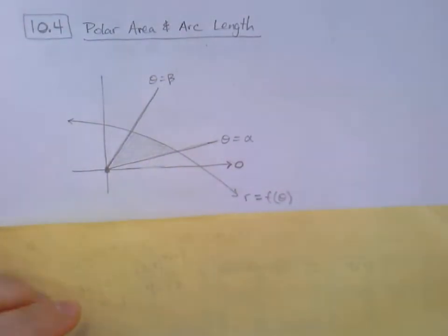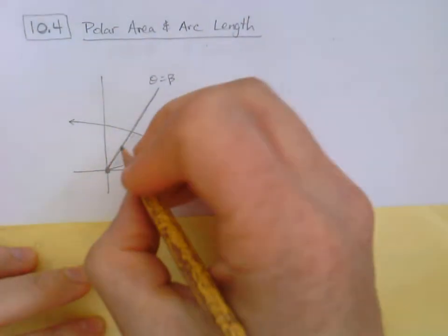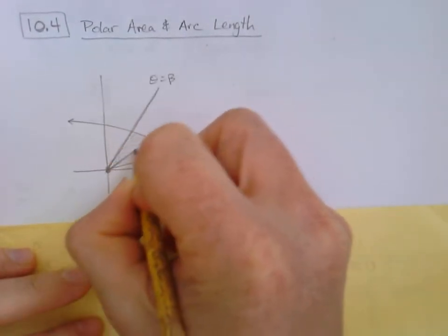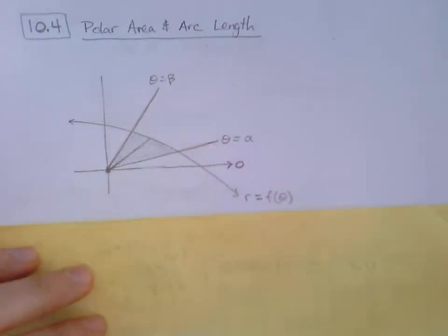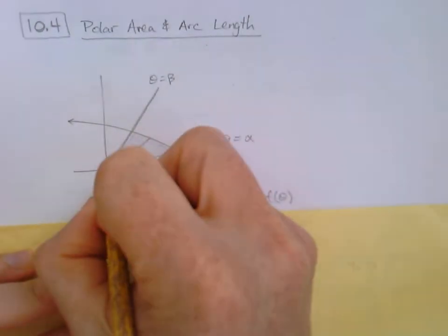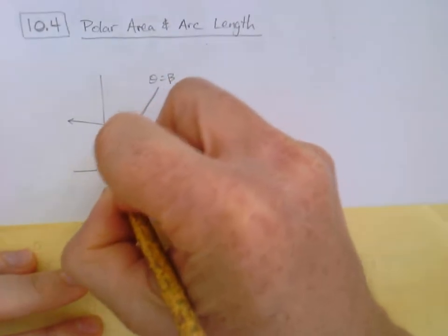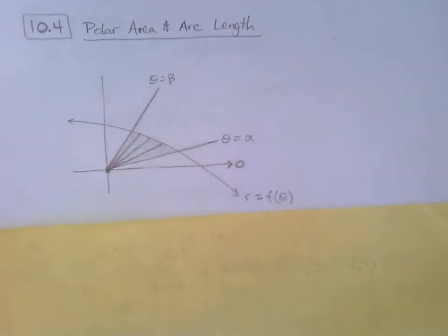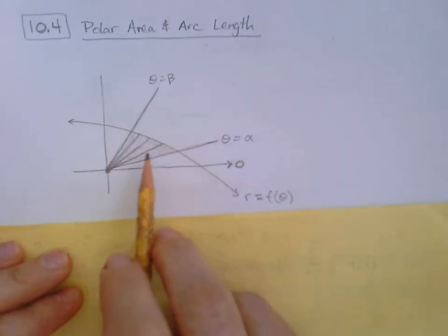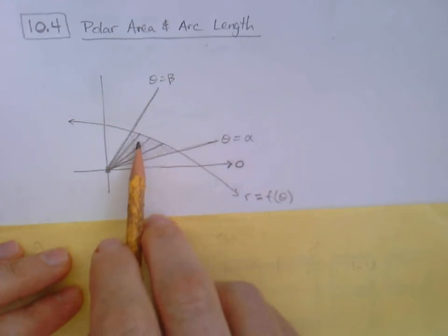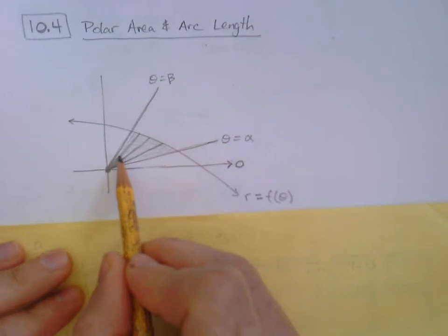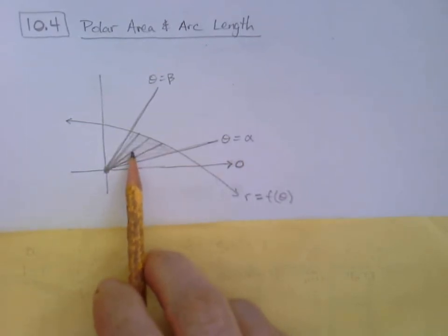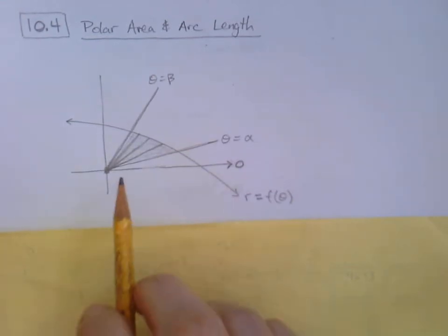We're going to divide this area up into very small sectors. Think of dividing it in half, then in half again — cutting it into four equal-size angles. You can clearly see how this thing elongates: the first sector is quite a bit larger than the last, even though the angles are the same. Eventually we're going to divide this into infinitely many little sectors.